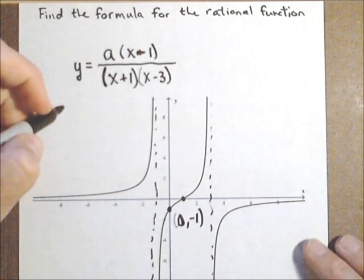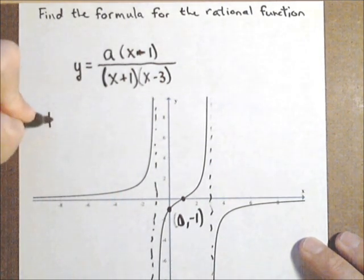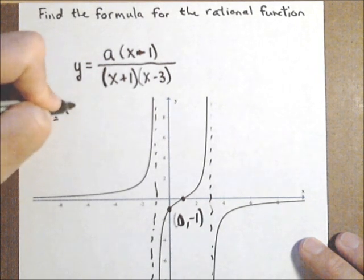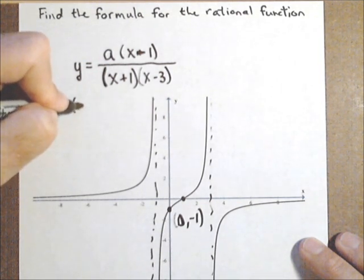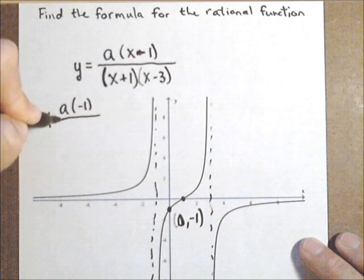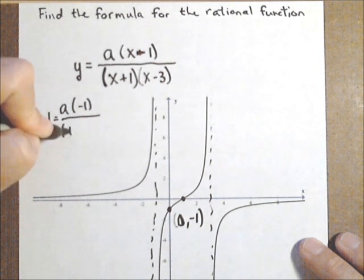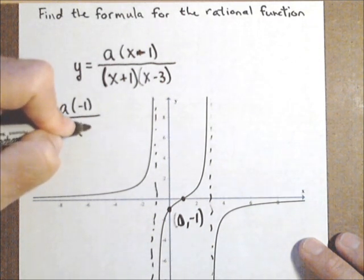So let's solve for that. So we're going to set y to negative 1 and all our x's to 0. So a times 0 minus 1 is a negative 1. Over 0 plus 1 is 1. 0 minus 3 is a negative 3.